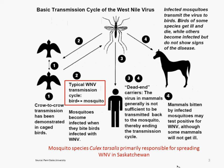The most important organisms in this case are what are called reservoir species — species other than humans that harbor the virus at large enough amounts that it can both be given to them and taken from them and passed to other animals. Specifically, the corvids — the family that includes crows, ravens, jays, and magpies — can get very high levels of virus within their bodies. Typically they die within a few days of infection.